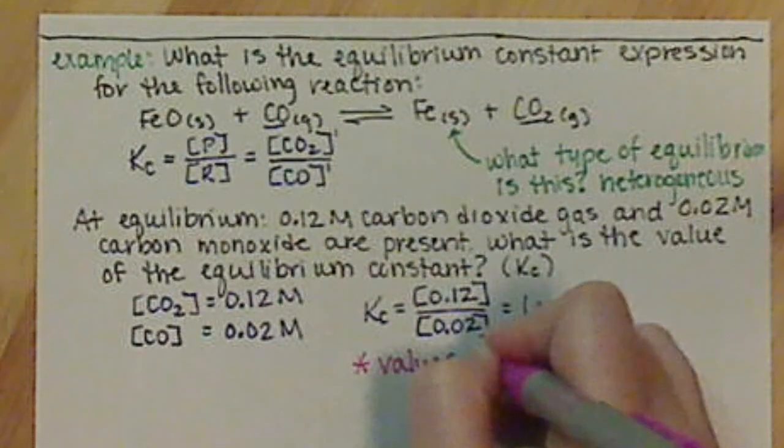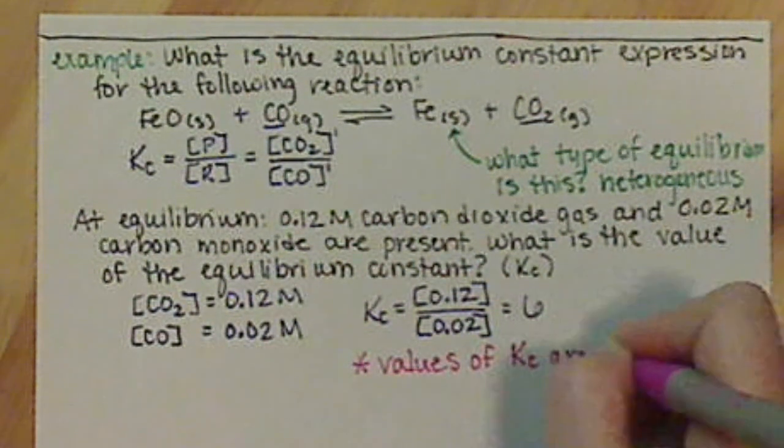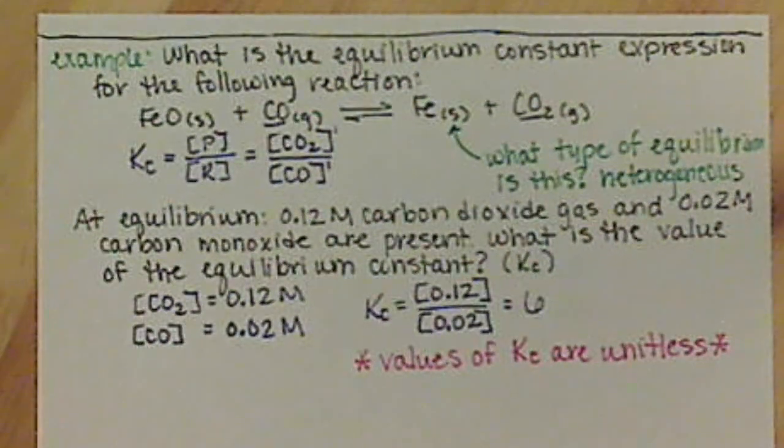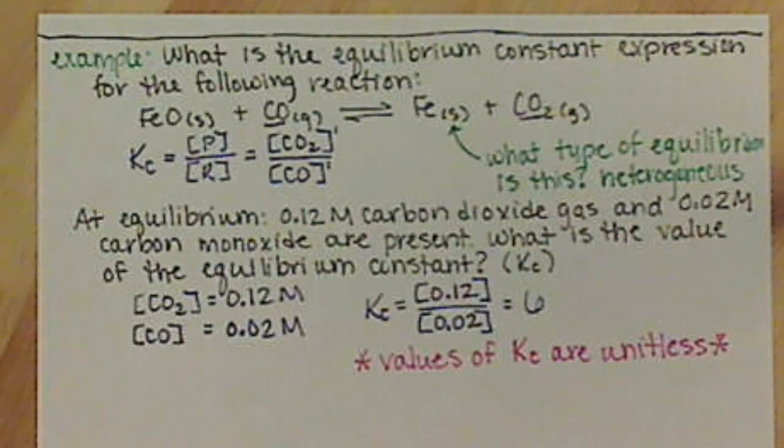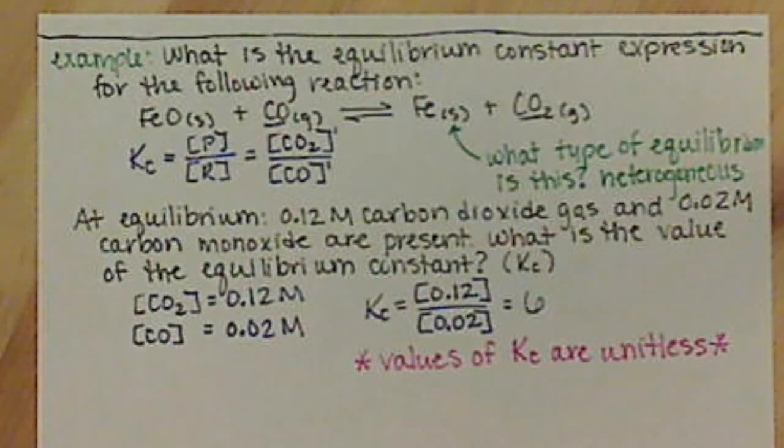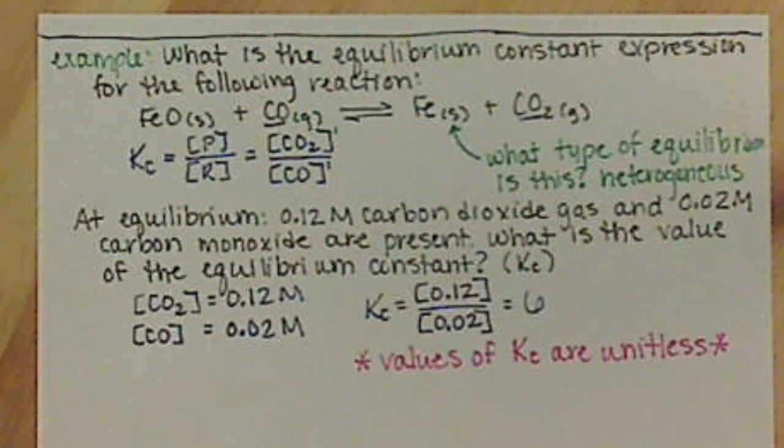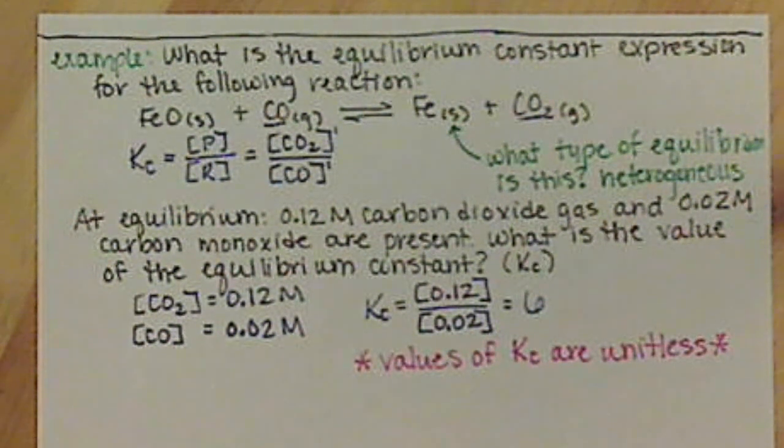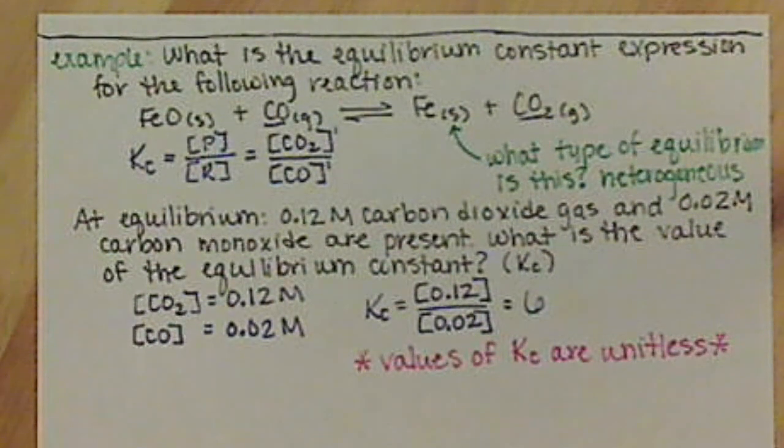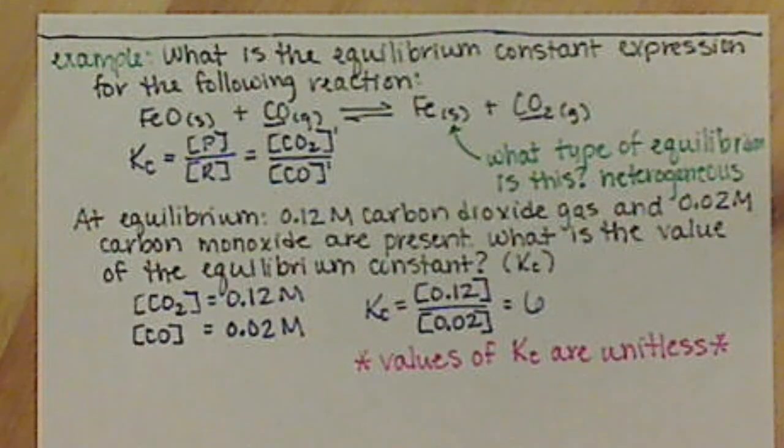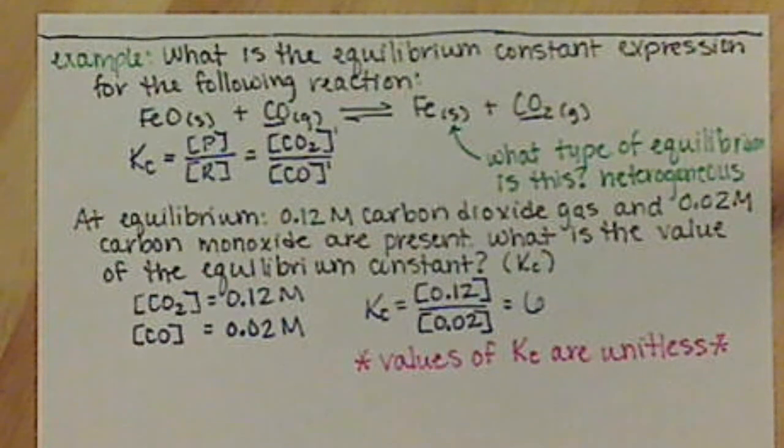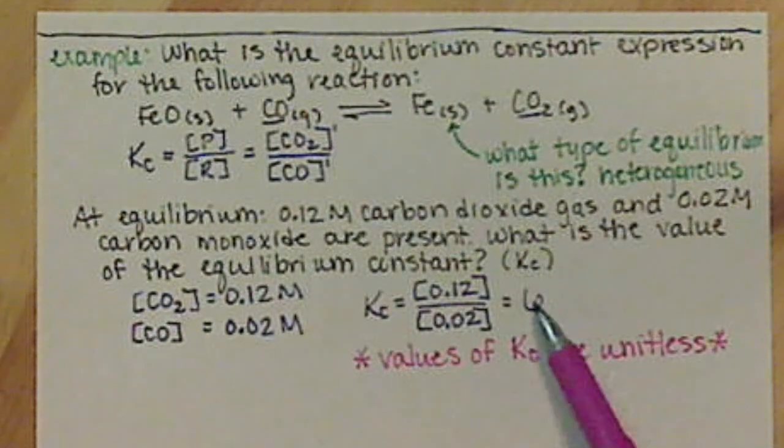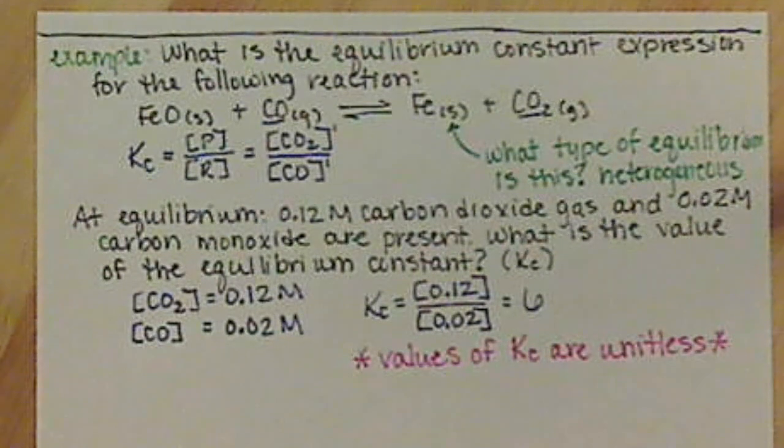So values of Kc are unitless. And we're going to have two different values that can be unitless in this class. Kc is one of them in this chapter. And when we get into pH in chapter 10, that is also unitless. These are the only two values that can be unitless. Otherwise, if you have a number, a numerical answer, it has to have units with it. If you don't put units with your number, I assume you mean fluffy bunnies. So Kc values are unitless. So just listing your answer as 6 is perfectly correct.